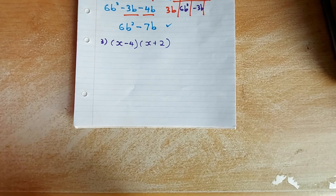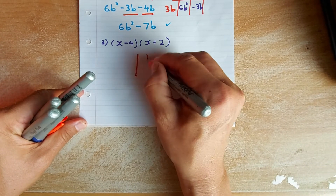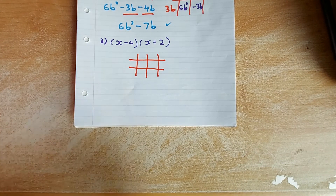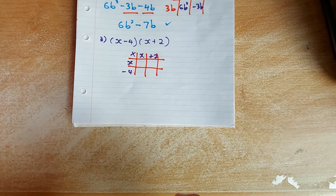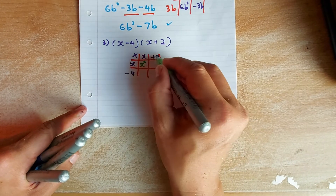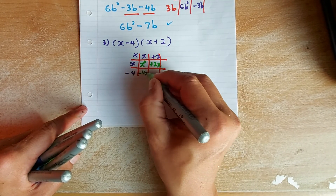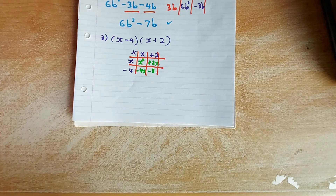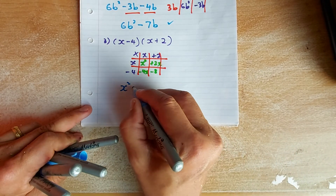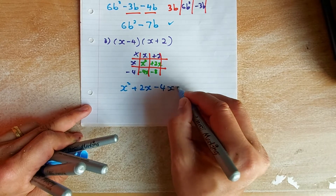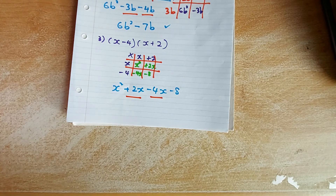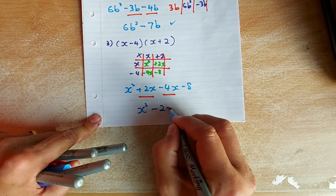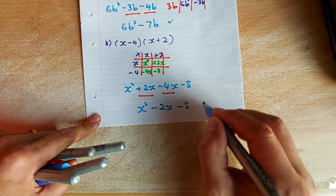The last expansion is a two-bracket expansion — the same procedure with the grid. This time there are two numbers on each side: x minus 4 and x plus 2. Multiply: x times x gives x squared, x times 2 is plus 2x, minus 4 times x is minus 4x, and minus 4 times plus 2 is minus 8. Collect like terms: plus 2x minus 4x gives minus 2x. Final answer: x squared minus 2x minus 8.